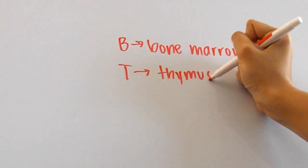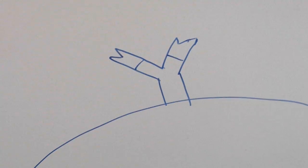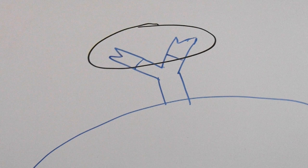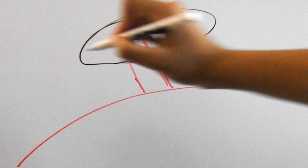These B and T lymphocytes function in recognizing antigens, which are foreign molecules. A B cell receptor looks like this with a variable region here, meaning it can be different for all B cells, while a T cell receptor looks like this with its variable region here.